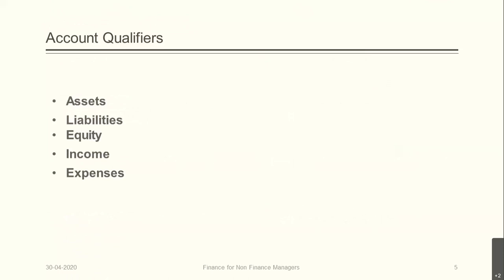There are only five qualifiers in the whole gamut of accounting. One: assets — things owned by an entity or organization. Two: liabilities — things owed to third parties by the organization. Three: equity — the amount of money or capital introduced by the owners. Four: income — revenue generated by the entity. Five: expenditure — expenses incurred by an entity during a particular time frame. Entire accounting depends upon assets, liabilities, equity, income, and expense.